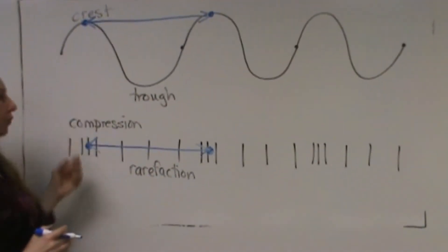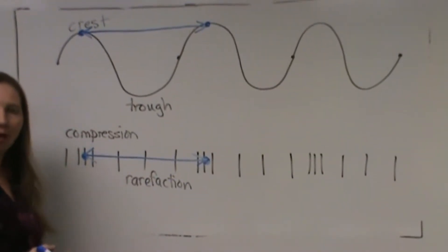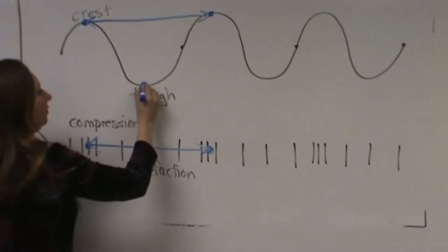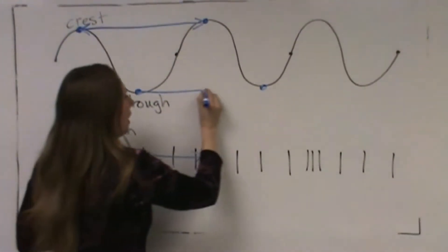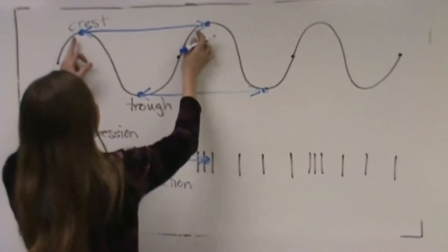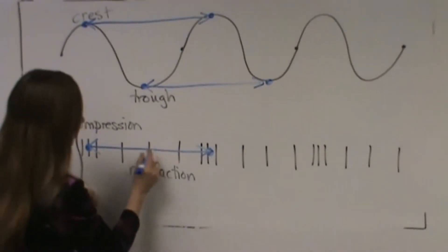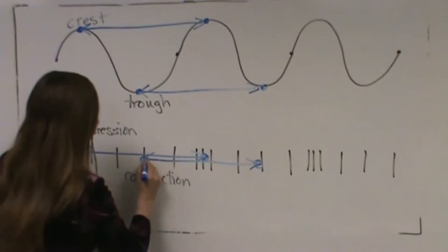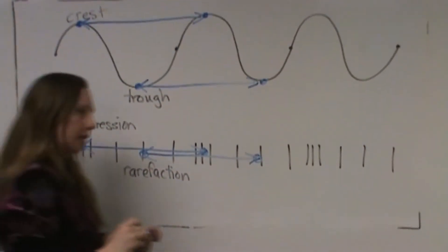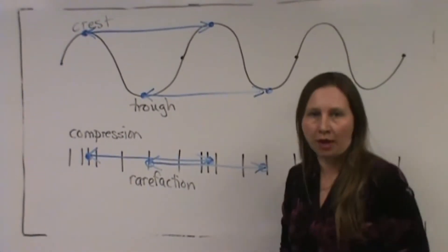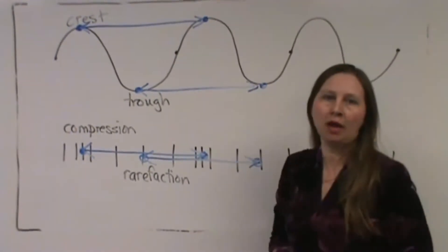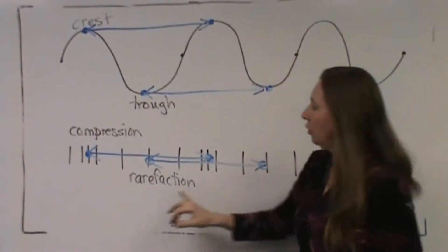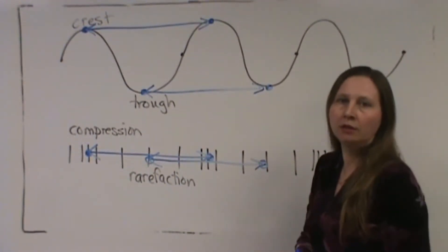We've drawn a transverse wave and a longitudinal wave with approximately the same wavelength — crest to crest or compression to compression. You see that trough to trough would also give you the wavelength. And rarefaction to rarefaction — the part where it's spread out — would also give you the wavelength of the sound wave. For the longitudinal wave, compression to compression or rarefaction to rarefaction is defined as one wavelength.